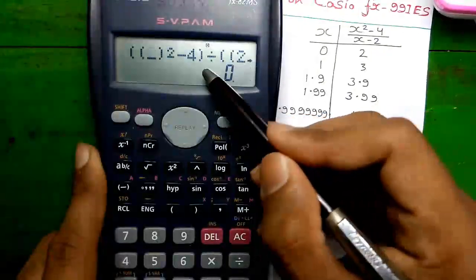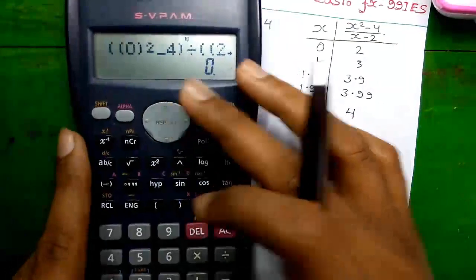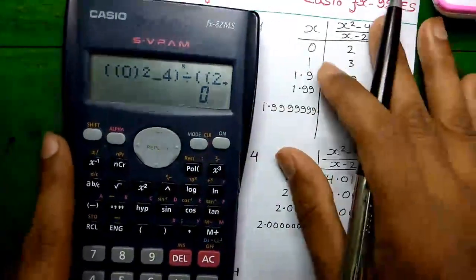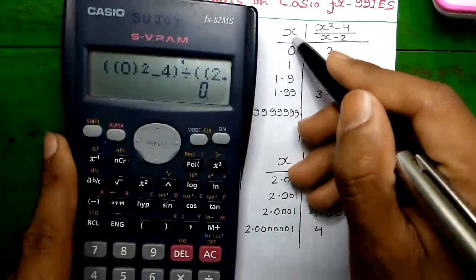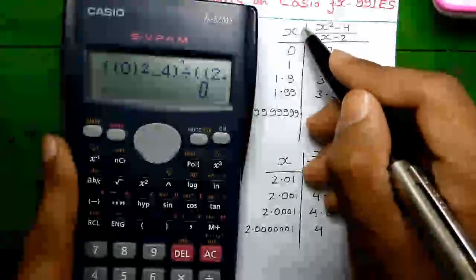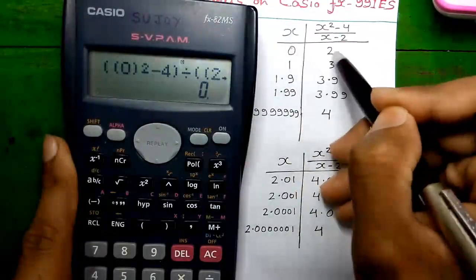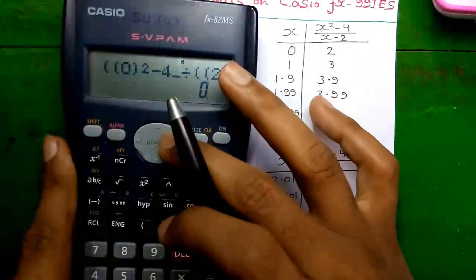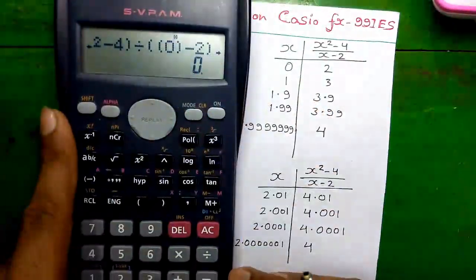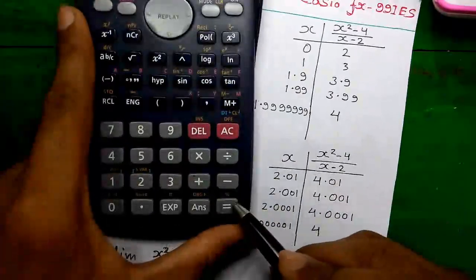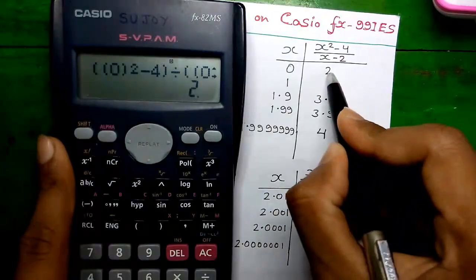The expression is already formed. We have constructed two columns: in the first column we write all x values, and in the second column the value of the expression for that particular x. Replace the value 2 with 0, since x is 0 now, and press the equals button. You will get 2. So for x equals to 0, the result is 2. Now let's go closer to 2 — increase the value by 1. For x equals to 1, the result is 3.